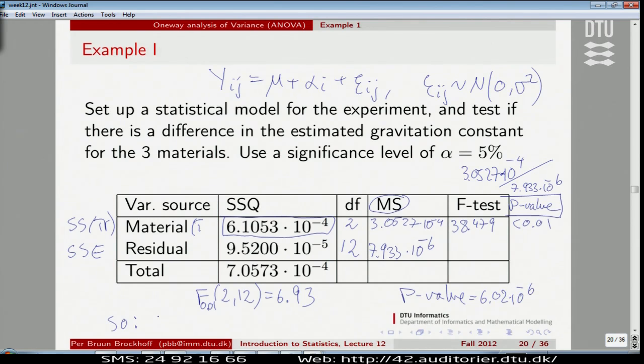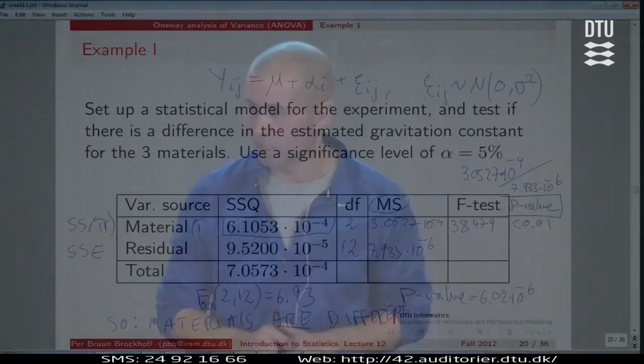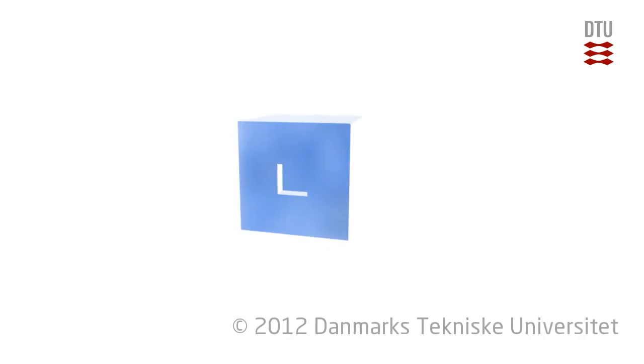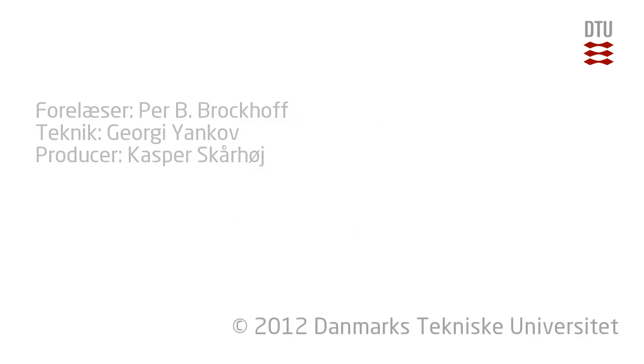So, conclusion. Materials are different. Right? We reject the null hypothesis of them being the same. Because we have seen a too unlikely difference between the three averages. So they must generically be different. We reject the null, we have to go for the alternative that they are different. That was the first part of this.